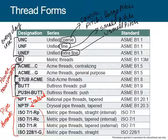Just to summarize: for everyday use we have coarse, fine, and extra fine, based on the pitch. Then we have ACME and buttress thread, which are used for power transmission. And then we have pipe threads — in the English system, classified based on whether you need a dry seal or a sealant.